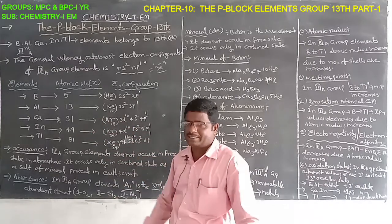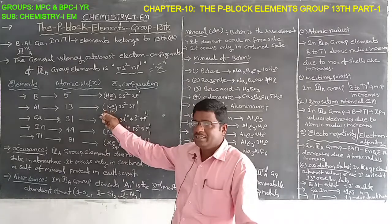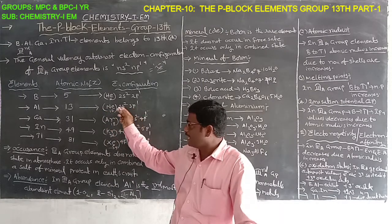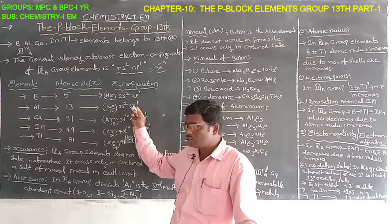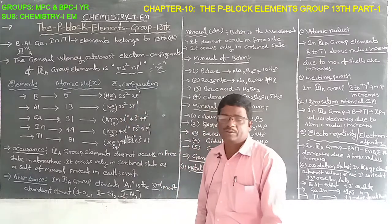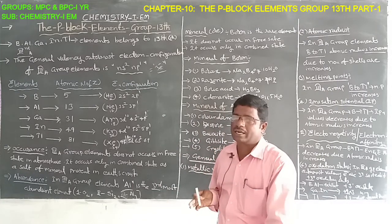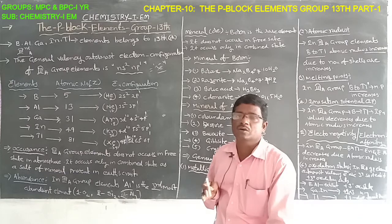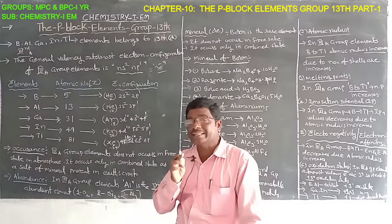Aluminium has atomic number 13. Its electron configuration is [Ne] 3S², 3P¹. The outermost total valence electrons are 3, so aluminium is also called a 3rd A group or 13th group element, due to having only 3 outermost valence electrons.